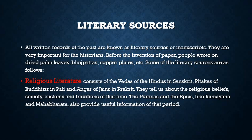The first category is religious literature. What is religious literature? It consists of the Vedas of the Hindus in Sanskrit, the Pitakas of Buddhists in Pali, and the Angas of Jains in Prakrit. These are the sacred books of those three religions.